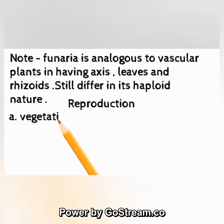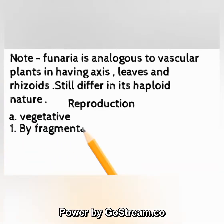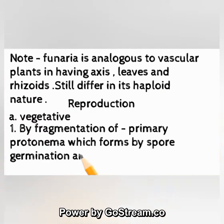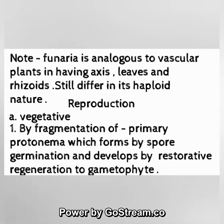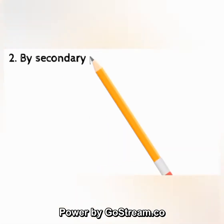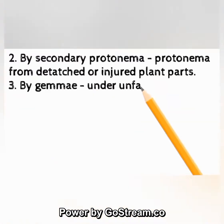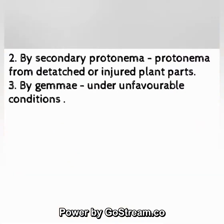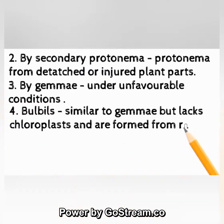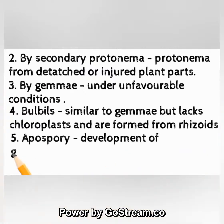Vegetative reproduction: (1) by fragmentation of primary protonema formed by spore germination, which develops by restorative regeneration to gametophyte; (2) by secondary protonema from detached or injured plant parts; (3) by gemmae under unfavorable conditions; (4) by bulbils — similar to gemmae but lacking chloroplasts — formed from rhizoids; (5) by apospory — development of gametophyte from sporophyte without spore formation.